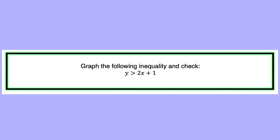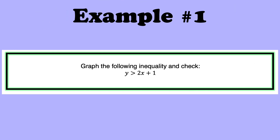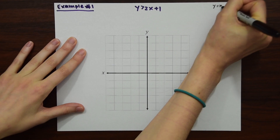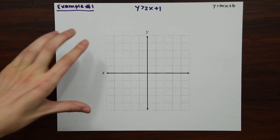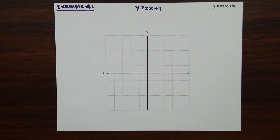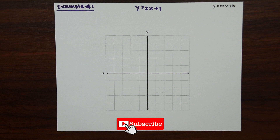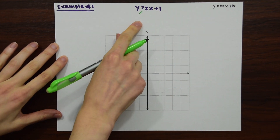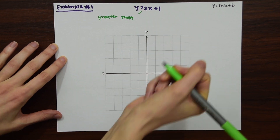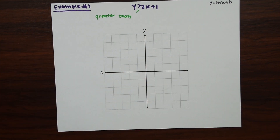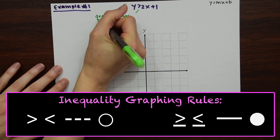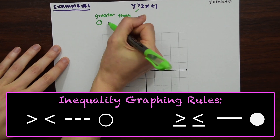Our first question is y is greater than 2x plus 1. To graph this, think of it as a regular equation of a line y equals mx plus b. Before we start graphing, pay attention to the inequality sign first. We have a strictly greater than sign, so we're going to be graphing with an open circle and dotted lines.